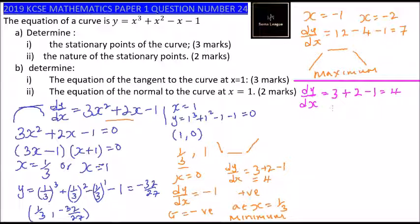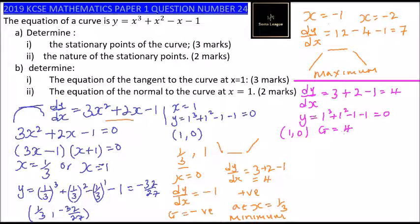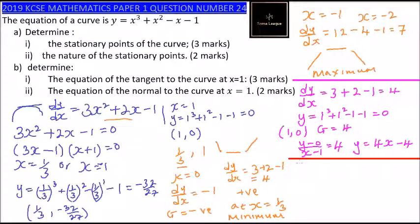A tangent is a line touching one point of the curve. We know the gradient is 4. We find the point: substituting x equals 1 into y gives 1 cubed plus 1 squared minus 1 minus 1 equals 0. So the tangent touches the point (1, 0). Using (y minus 0) divided by (x minus 1) equals 4, cross multiplying gives y equals 4x minus 4. That is the equation of the tangent.